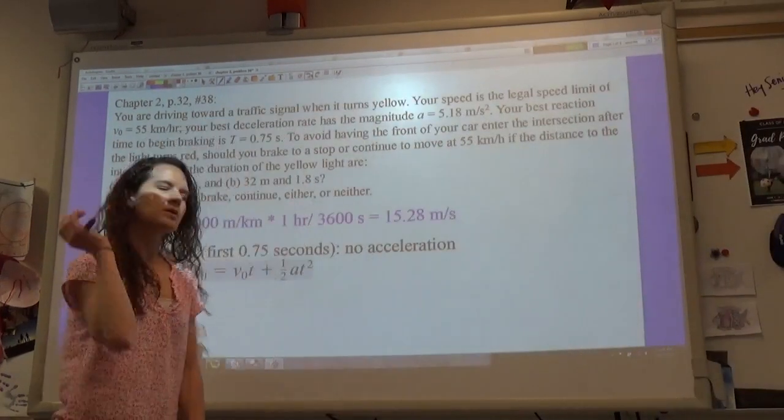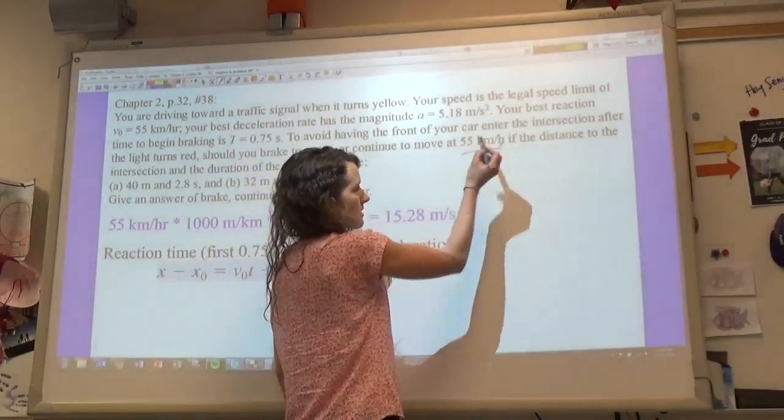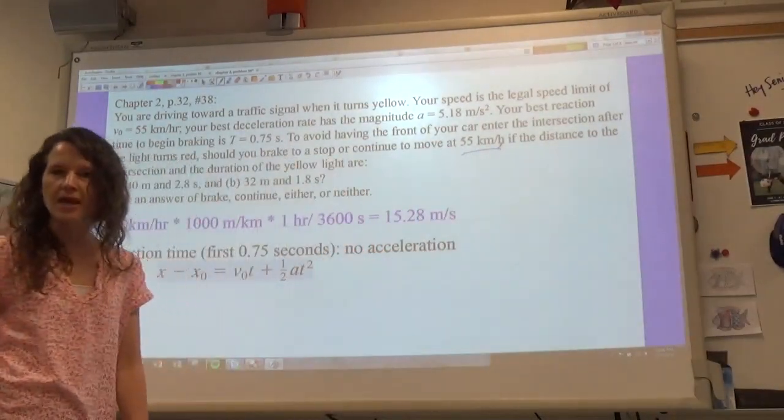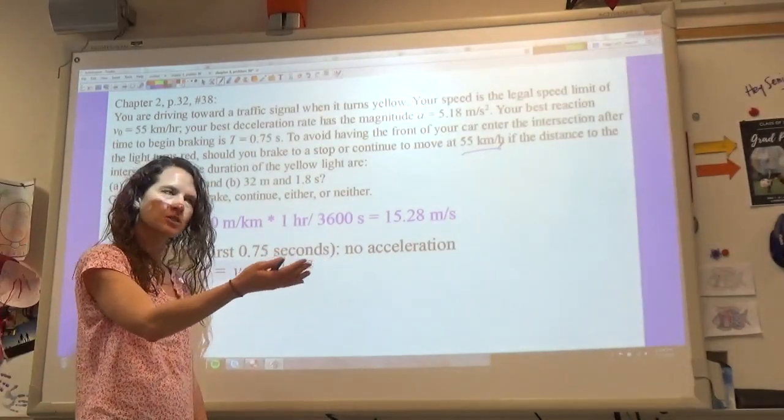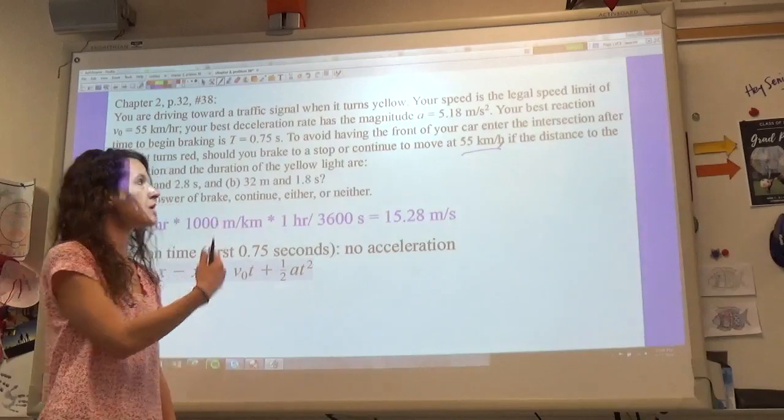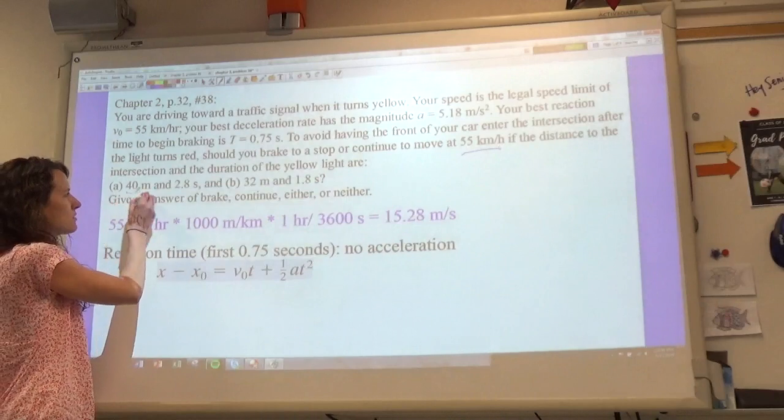So this is a problem where you are driving at 55 kilometers per hour and then the light turns yellow, and you are told that you need to figure out whether you should proceed through the intersection or if you should stop. So this is from chapter 2 number 38.